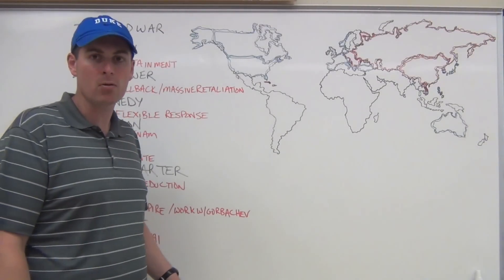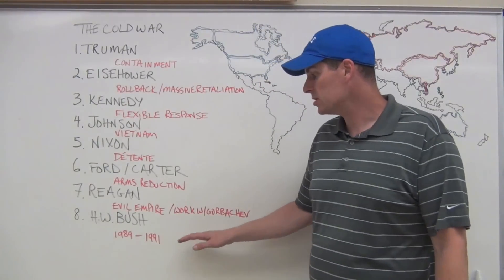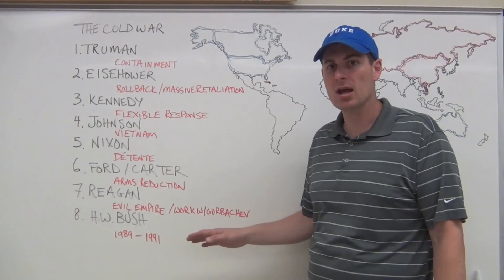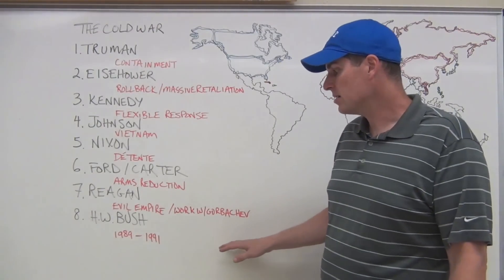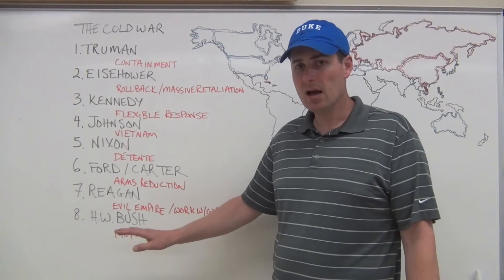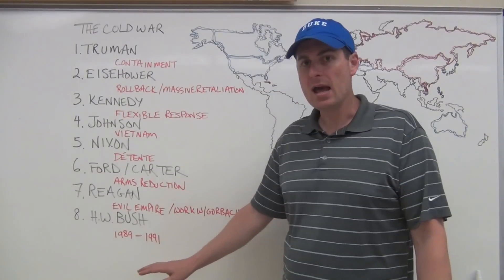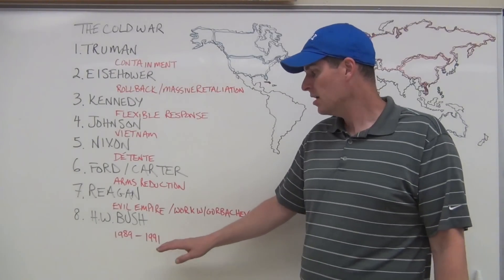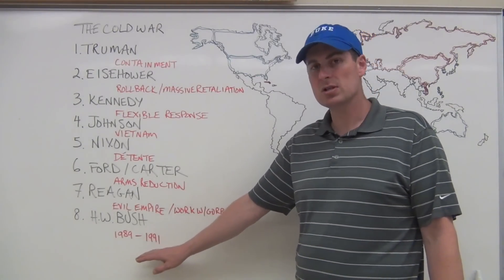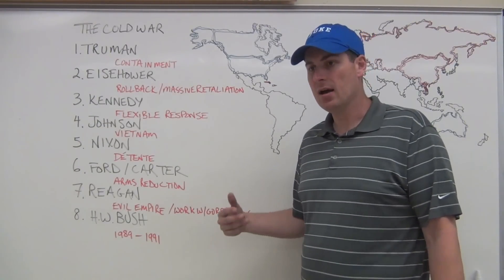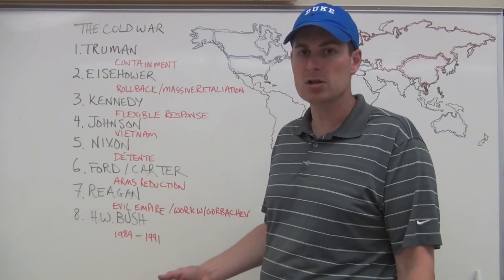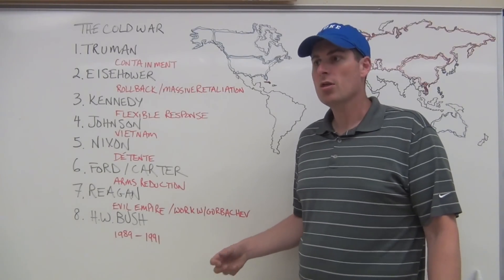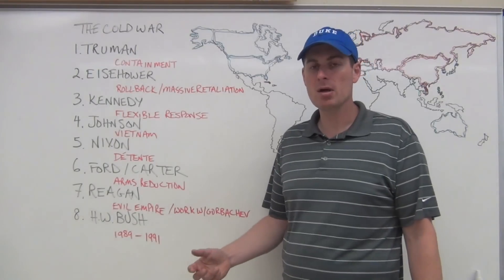Summits between Reagan and Gorbachev keep warming relations to where the hostile relationship seems to thaw significantly. In 1989, a solidarity movement starts among workers in Poland and goes unchallenged by the Soviet Union — Gorbachev doesn't crack down like previous leaders had on Hungary. By this time, George H.W. Bush is president, and the Berlin Wall falls. Country after country follows: Czechoslovakia gets rid of its dictator, and many Eastern European countries throw off Soviet oppression as the Soviets choose not to crush the revolts — a total opposite of Hungary.